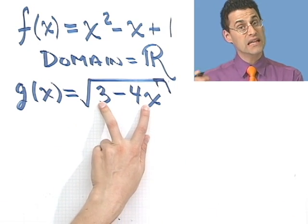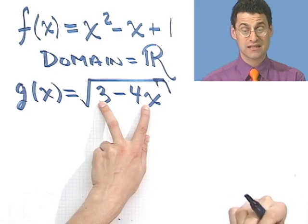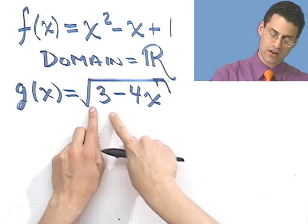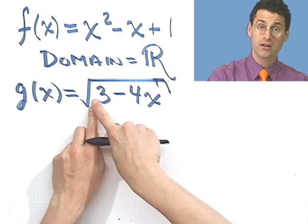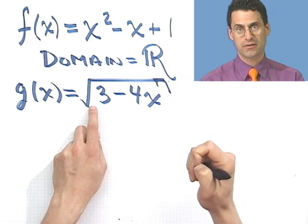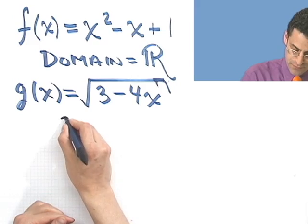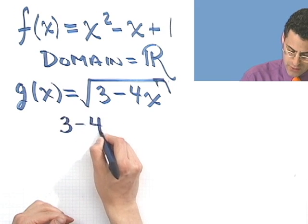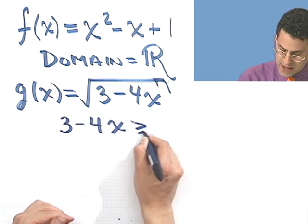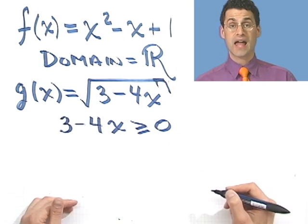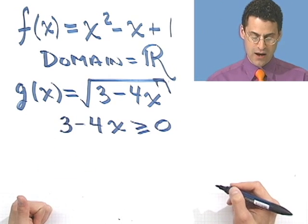Well, what's the domain of this function? What are the allowable x values that I could plug in? Well, let's think about it for a second. I'm taking the positive square root of this quantity. So the only allowable x's are those x's for which this entire thing, under the radical, is going to be positive.